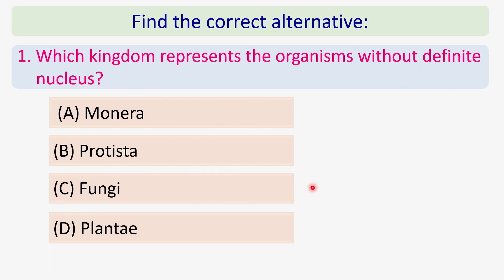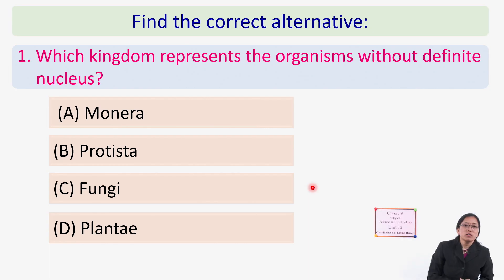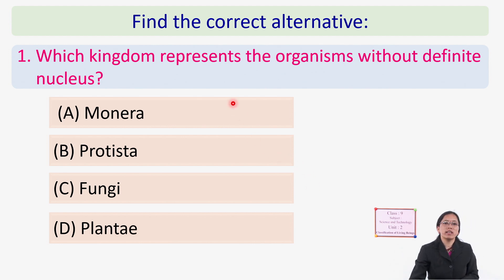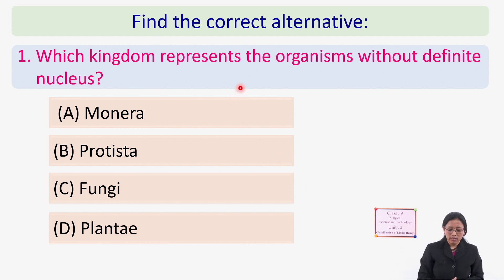First question: Which kingdom represents organisms without a definite nucleus? The answer is Monera.